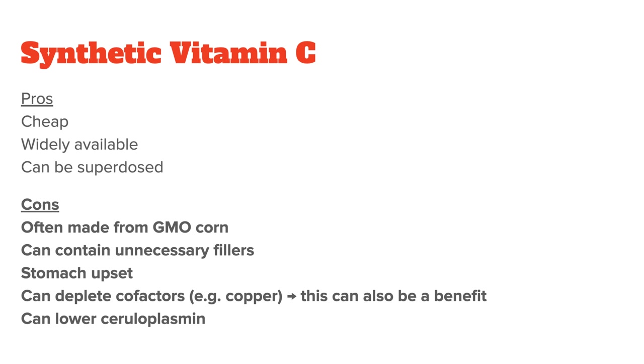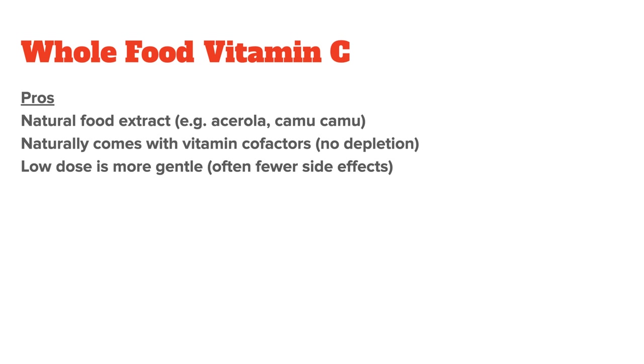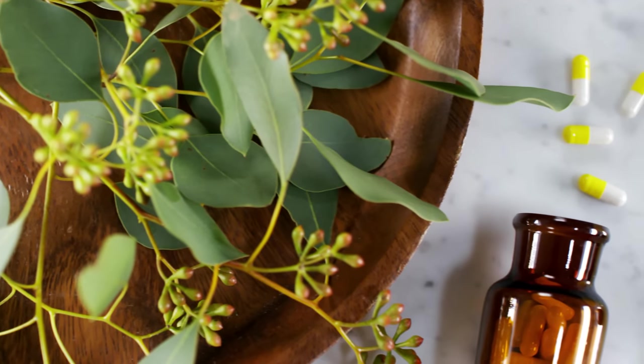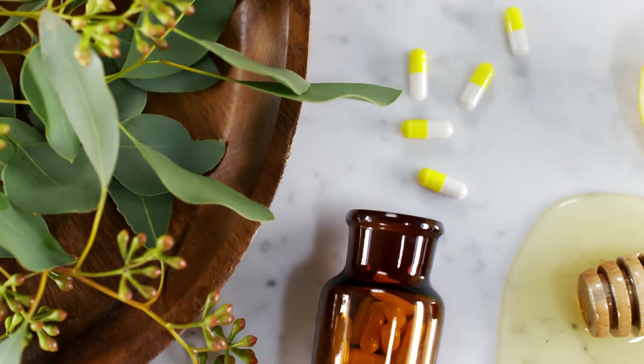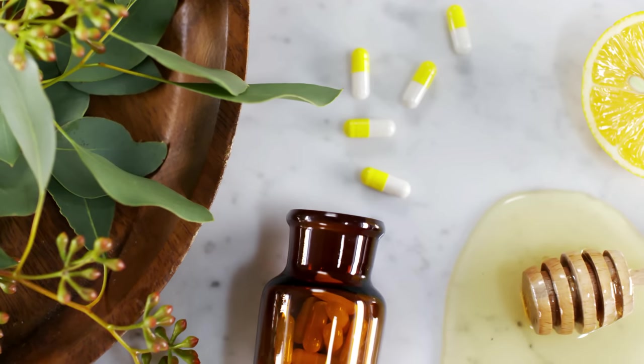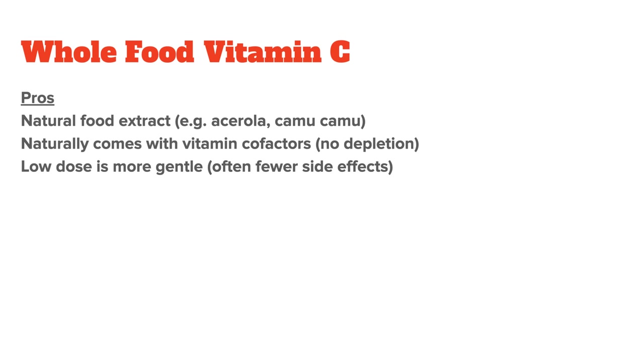Now on to whole food vitamin C. Here the benefits are that it comes from whole foods, usually freeze-dried, for example, acerola cherries or camu-camu. It also comes with vitamin cofactors that are naturally found in the foods that the supplements are derived from. Because concentrating a food into a supplement can only be done up to a point, whole food vitamin C supplements usually come in lower doses than synthetic vitamin C supplements. So instead of 500 or 1,000 milligrams, you usually get only 200 milligrams per capsule.